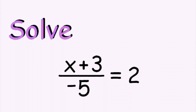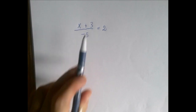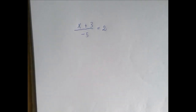This is a two-step equation. What happened to the unknown is first an addition and then a division by negative 5. To isolate x on the left-hand side, we're going to first multiply by negative 5 and then subtract 3.